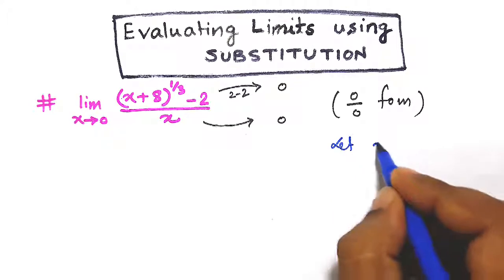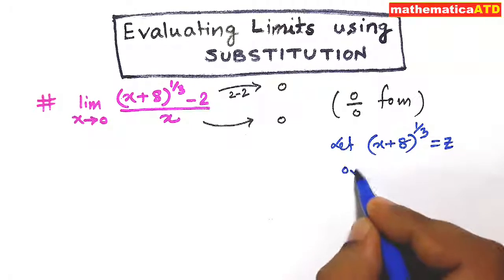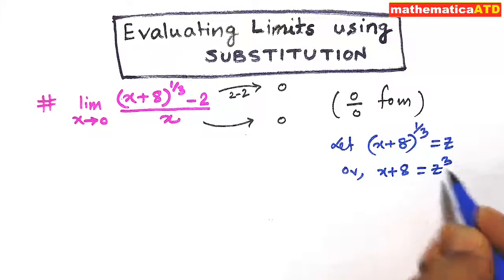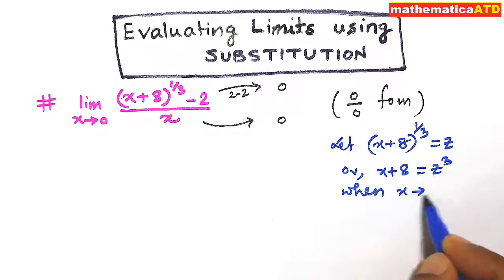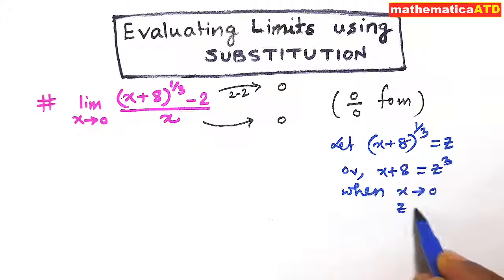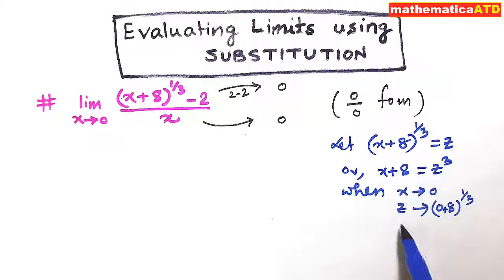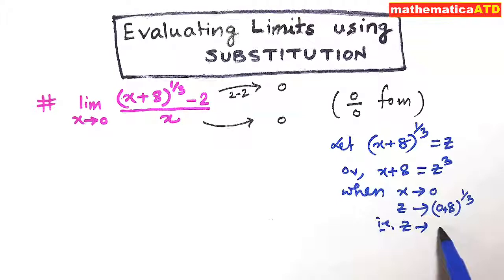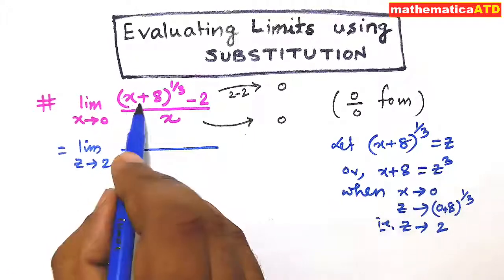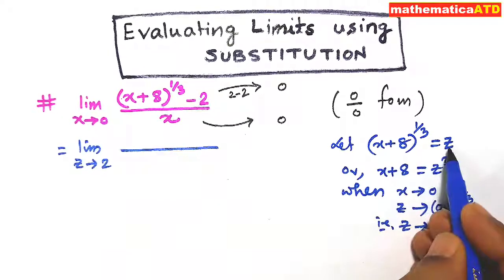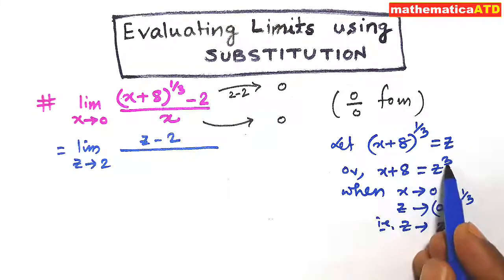Let's consider that x plus 8 whole to the power 1 third is equal to z. So x plus 8 is equal to z cube. When x tends to 0, z is tending to 0 plus 8 whole to the power 1 third, that is z is tending to 2. So here, limit z tends to 2. Since x plus 8 whole to the power 1 third equals z, we have z minus 2 divided by x. What is x? x is equal to z cube minus 8.